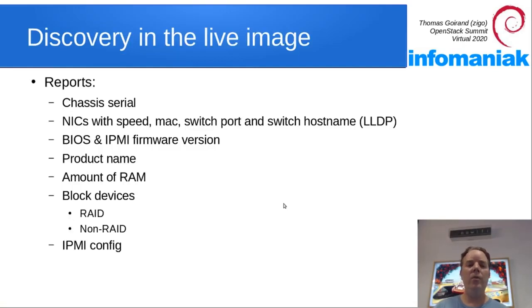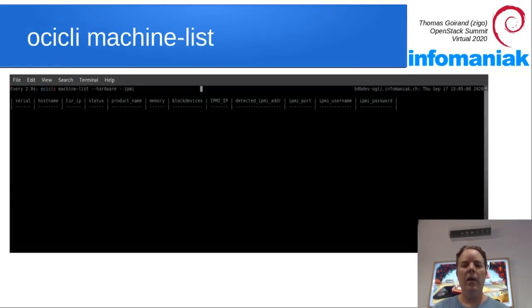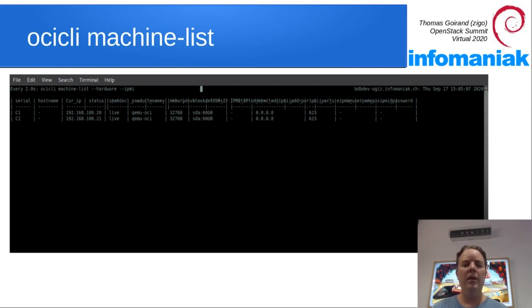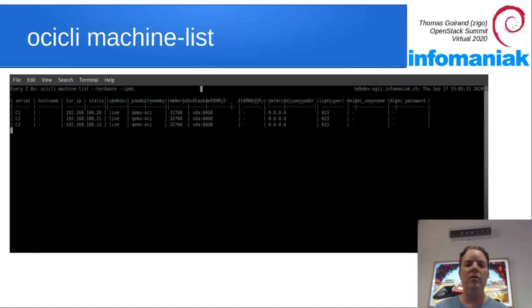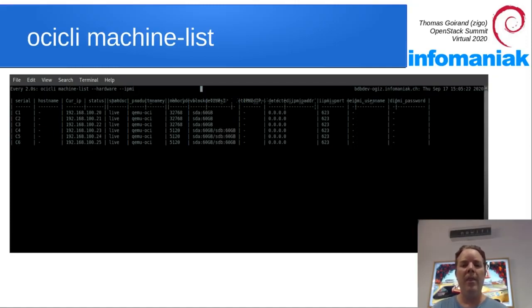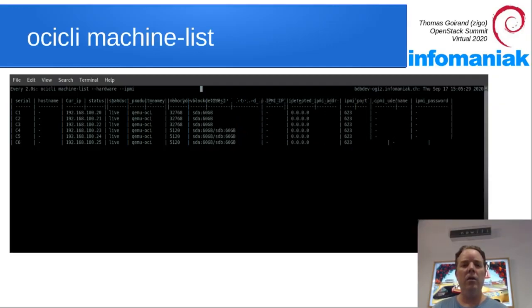The hardware discovery script reports a bunch of things like the chassis serial numbers, NIC speeds, BIOS and IPMI firmware versions, product names, amount of RAM, and block devices. Here's how it looks from the OCI client side. You can see a bunch of VMs popping up one by one as the hardware discovery script reports to the central OCI server. For example, the machine with serial C4 has two hard drives while the first three have only one.